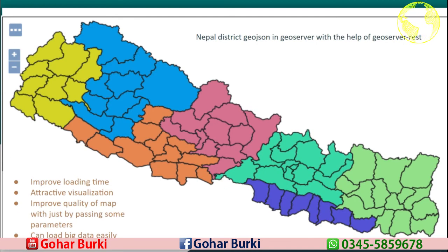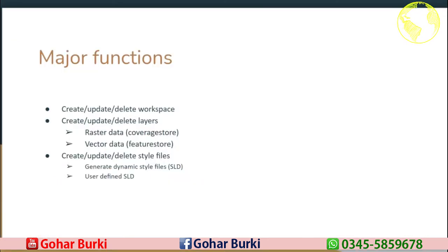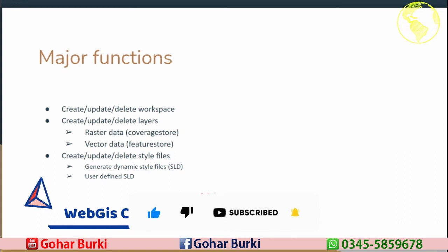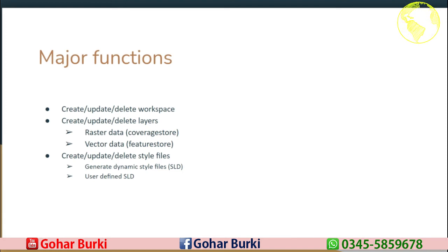With the help of GeoServerRest we can achieve everything using this library — we can improve the loading time, add attractive visualization, and improve the quality of the map just by passing some parameters into functions. I'll explain this later in the series, but this is the general overview. GeoServerRest has three main functionalities: it can create, update, and delete workspaces; create, update, and delete layers — both raster data (called coverage stores) and vector data (called feature stores) in GeoServer; and create, delete, and update style files. We can generate dynamic styles from uploaded files or define SLD files by passing parameters into functions.